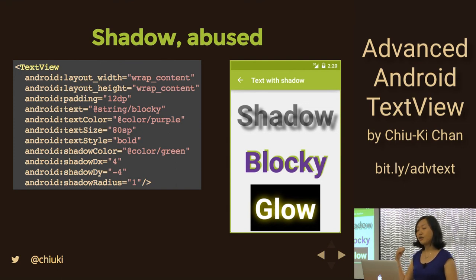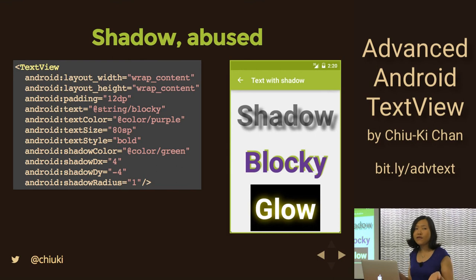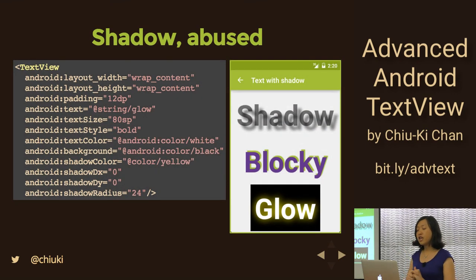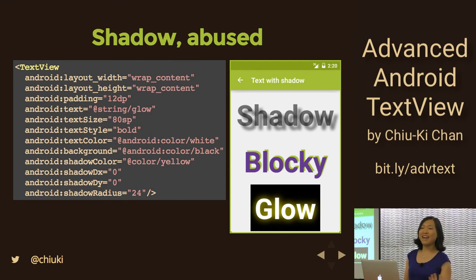Even though the parameters are called shadow, nobody said you have to use them for shadow. I'm going to abuse it a little. For the blocky 3D effect, instead of casting the shadow down I move it up, and instead of a blurry shadow I use a solid green color — so it looks sort of 3D. For the glow effect, the dx and dy are zero so the shadow is in place, but with a really big shadow radius it goes all around the text, and I change the color to yellow so it glows.